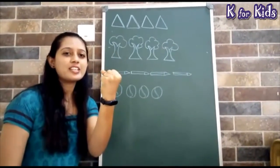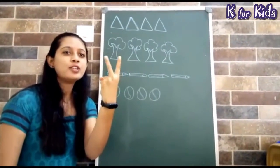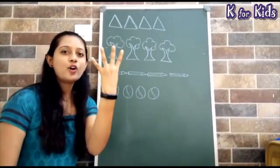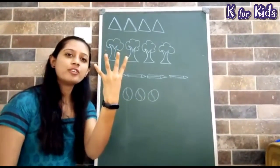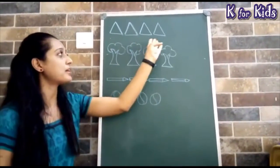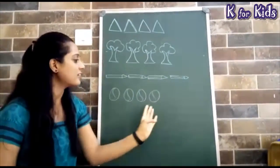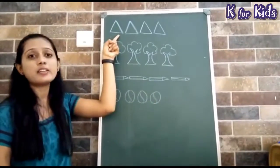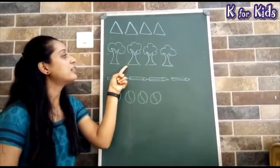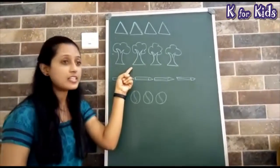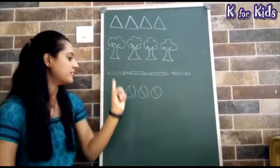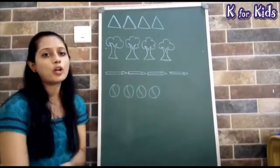Please count. 1, 2, 3 and 4. Now, I have drawn here. First, what have I drawn? Triangle. The next, what have I drawn? Trees. What have I drawn? Pansels. Balls.